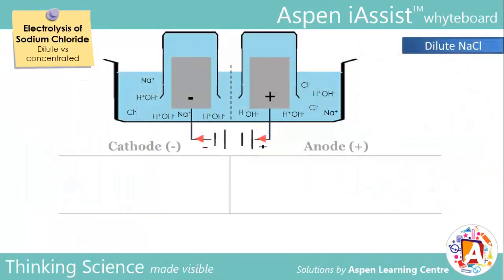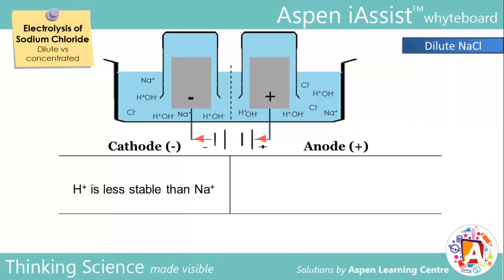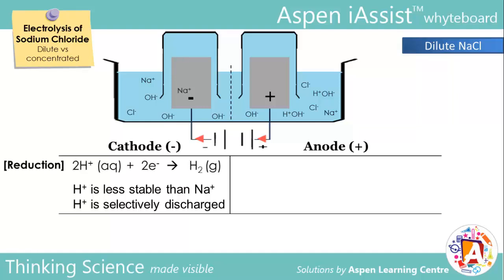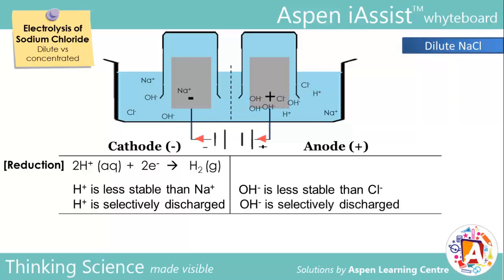Next, identify the discharge reactions that occur at each electrode. As electrons flow from the anode to cathode, a redox reaction takes place. At the cathode, H⁺ ions, being relatively less stable than Na⁺ ions, have a greater tendency to discharge. The H⁺ ions are thus selectively discharged over Na⁺ ions and are reduced to form hydrogen gas. At the anode, hydroxide ions are less stable than chloride ions, hence hydroxide ions are selectively discharged over chloride ions. The hydroxide ions are oxidized to form oxygen gas.